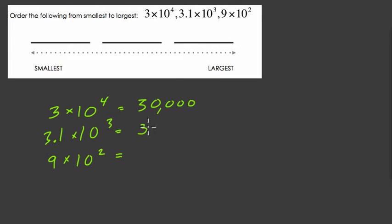Then we have 3,100. Here the decimal moves 3 places from between 3 and 1 over 1, 2, 3. That's 3,100. And then we have a 9 followed by 2 zeros.